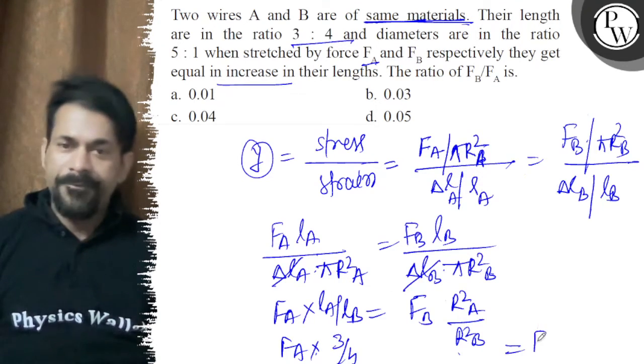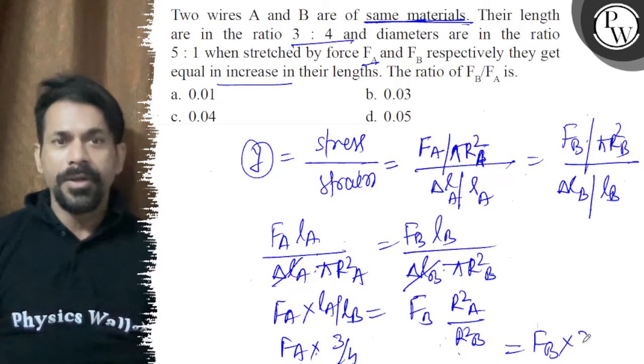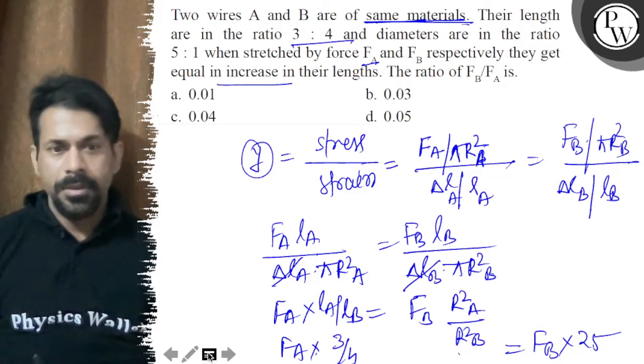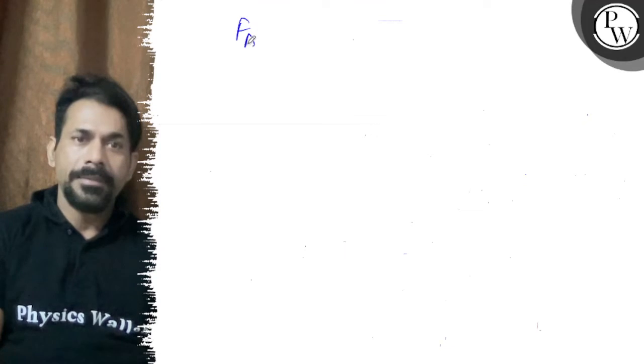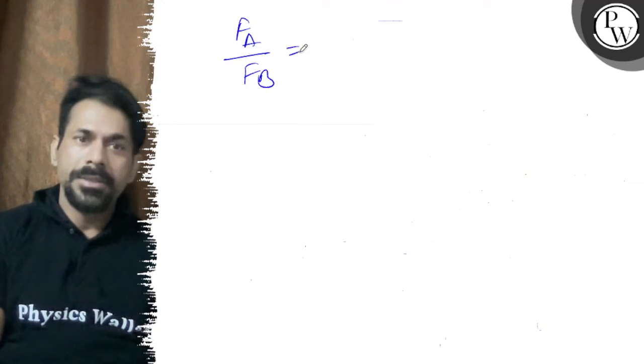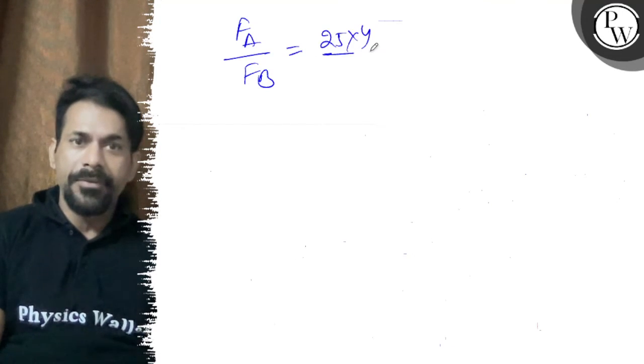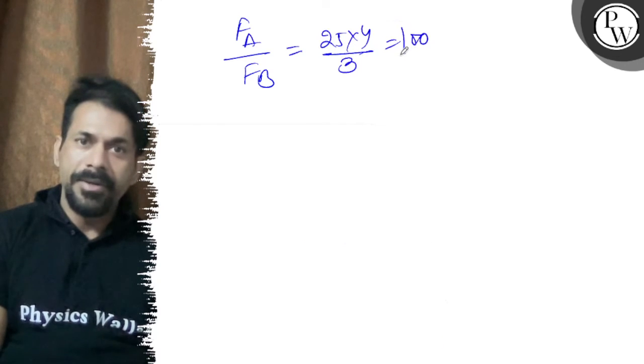So FA upon FB is equal to R square of A by R square of B. FA upon FB is equal to 25 into 4 by 3, so 100 by 3 must be your answer.